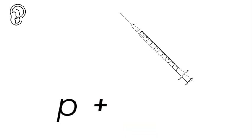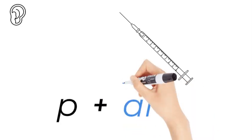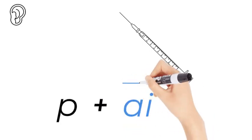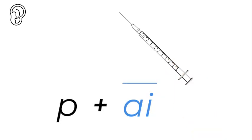Pa. A. That is a long vowel sound. Five long vowel sounds: A, E, I, O, U.